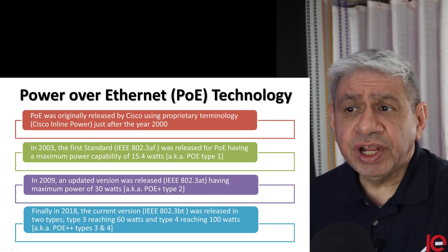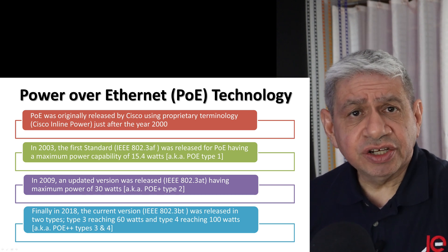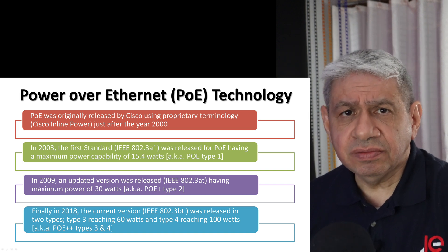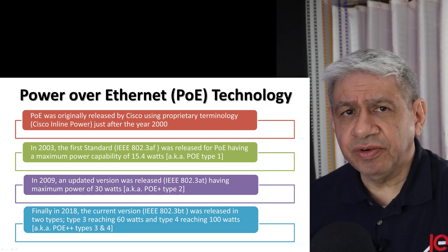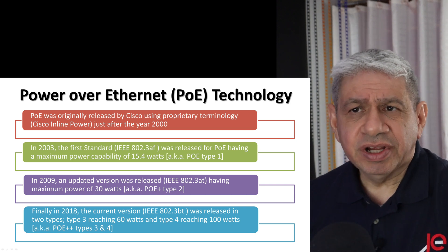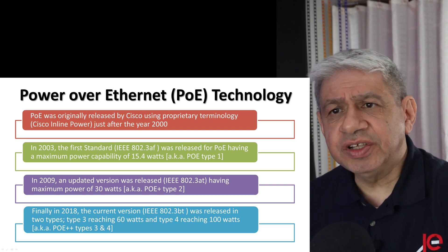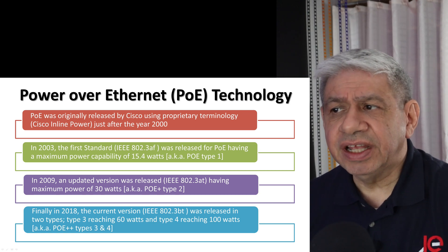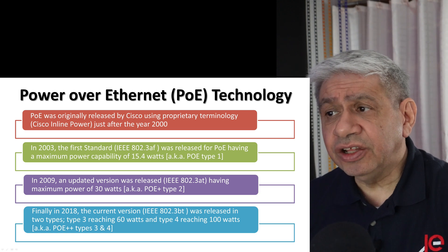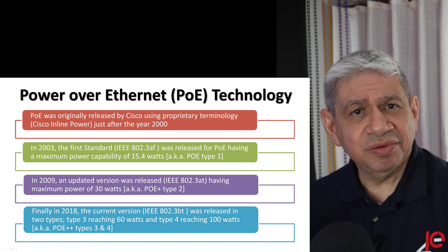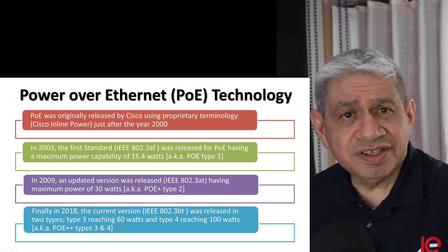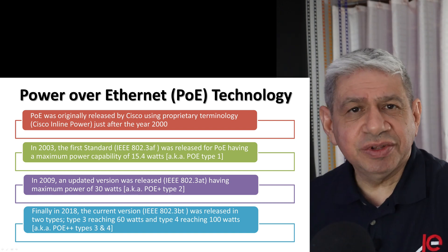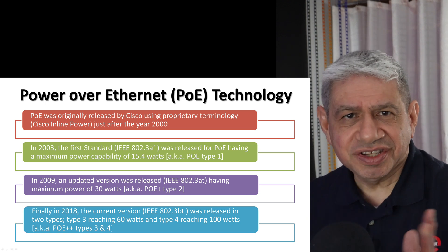In 2003, they came up with an international standard from IEEE, which followed pretty much what Cisco had developed. Cisco had called it "Cisco Inline Power," but IEEE renamed it "Power over Ethernet." Initially they didn't call it Type 1, but once they started developing newer versions, they renamed the older one as Type 1 — just like with USB standards.